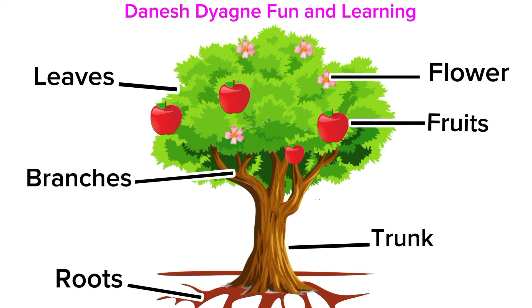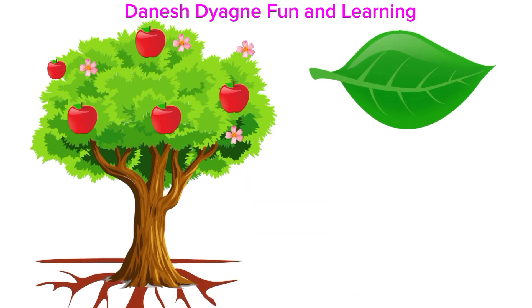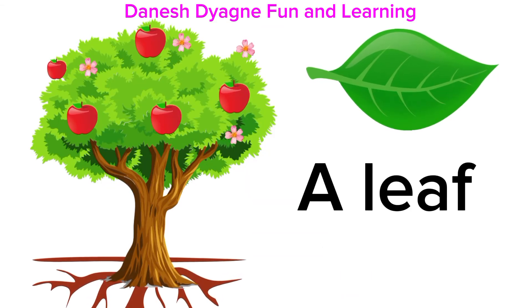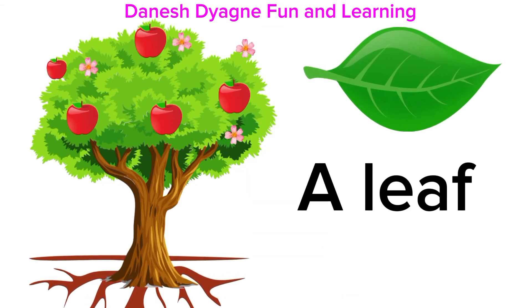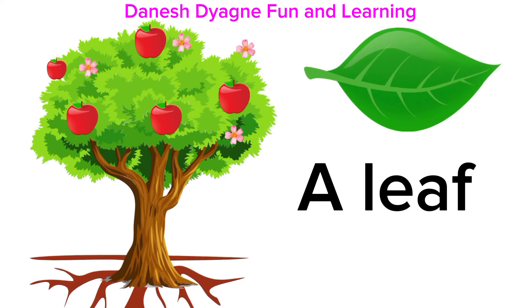Each part has a different function, so let's study each part closely. A leaf — this is where the plants make their own food.